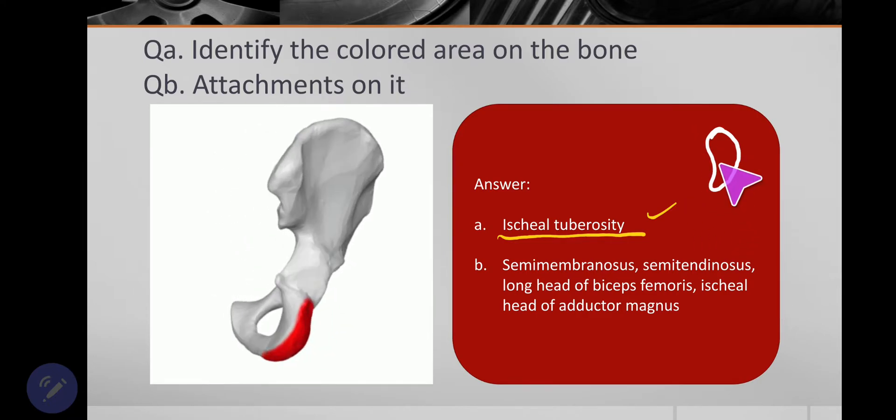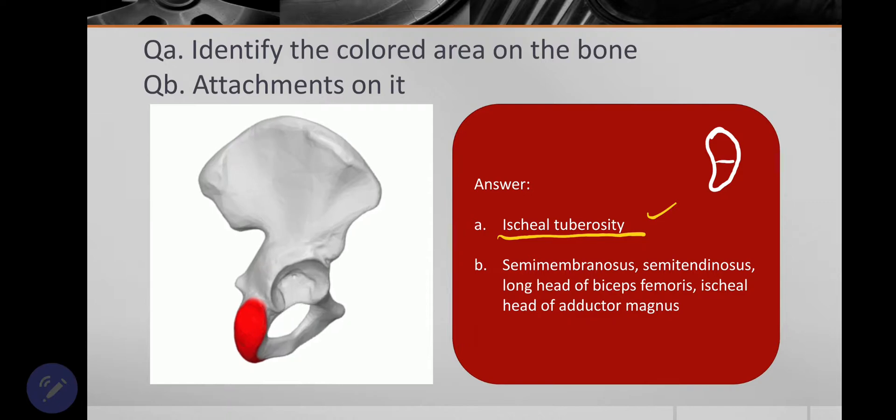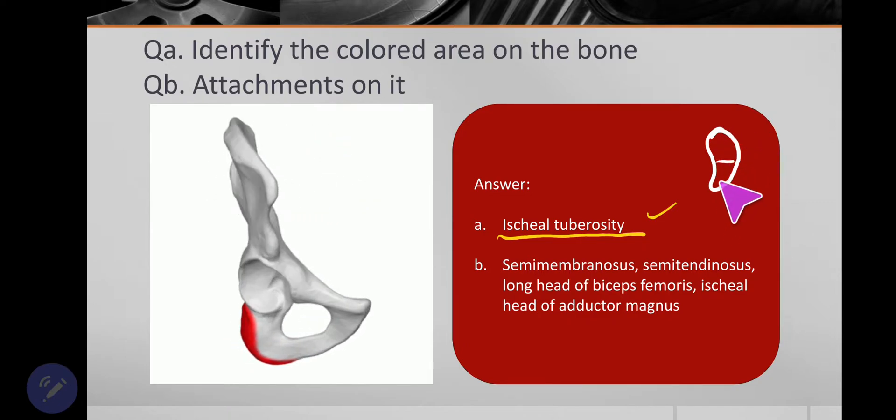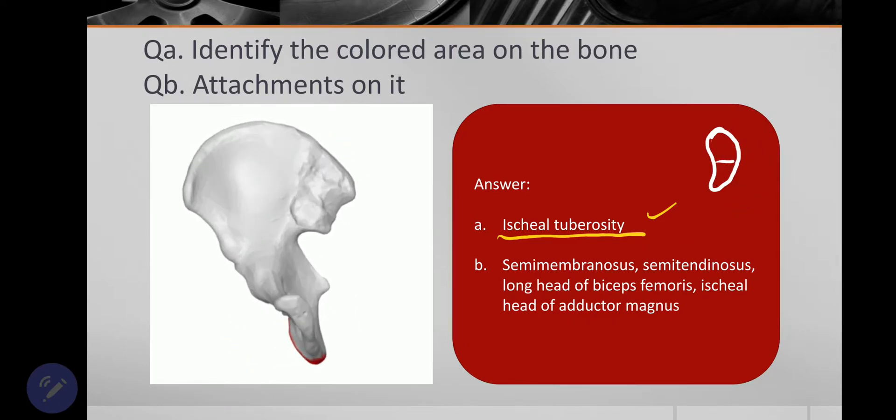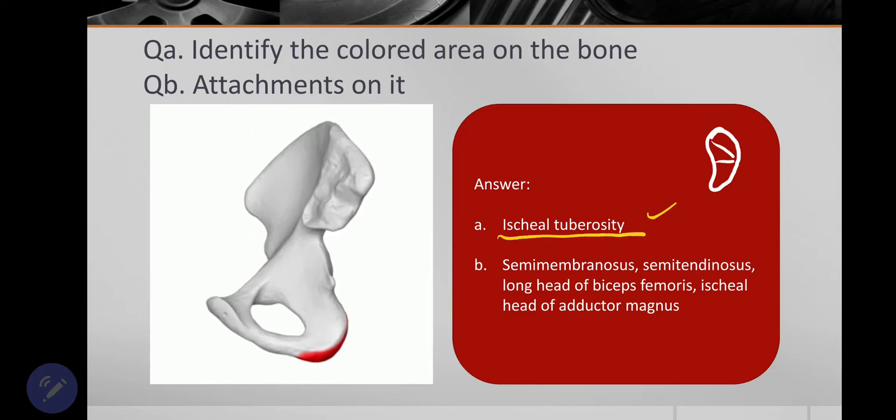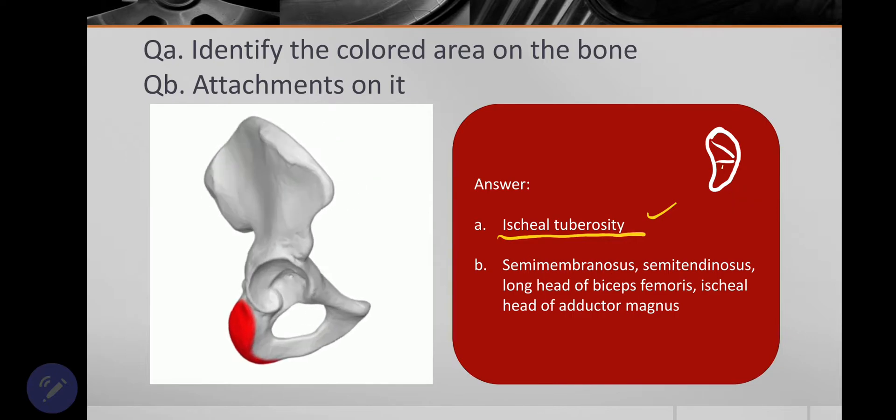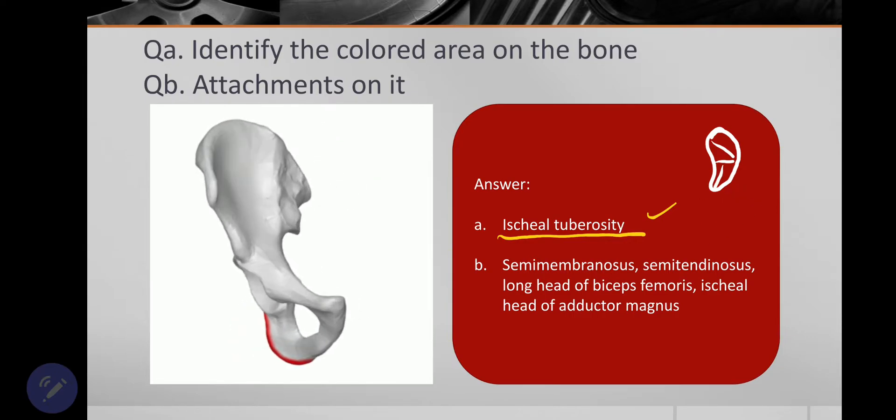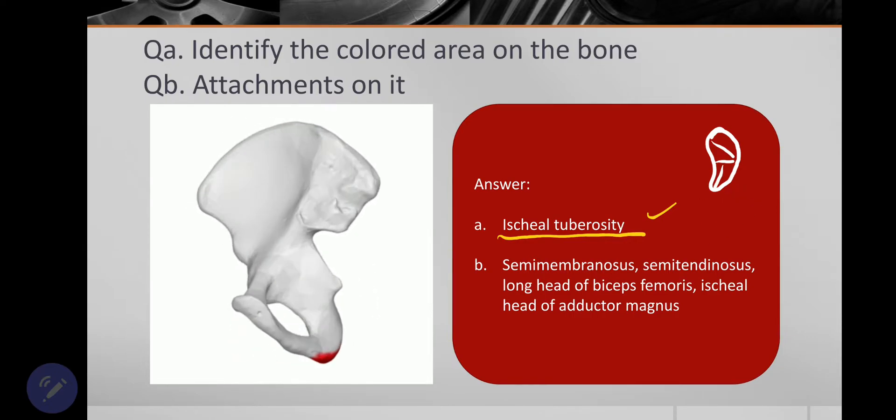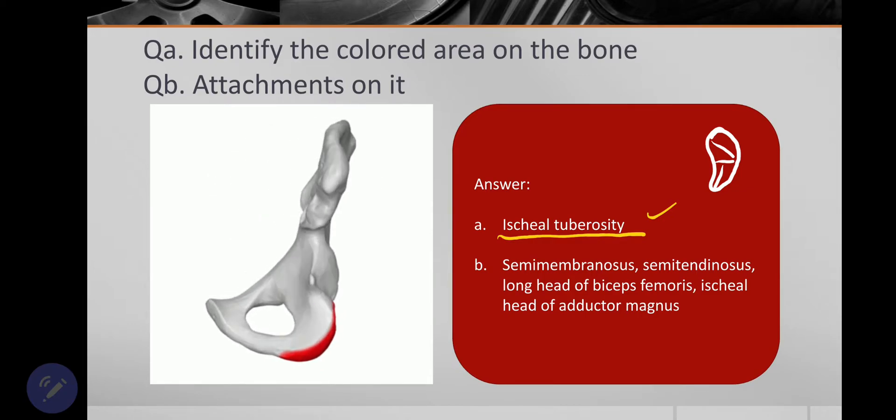And this ischial tuberosity is actually divided by transverse crest into upper and lower segments. The upper segment is again obliquely divided into supralateral and inferomedial surfaces. And the lower portion is divided by vertical ridge into outer and inner surfaces. So you have like four quadrants here.